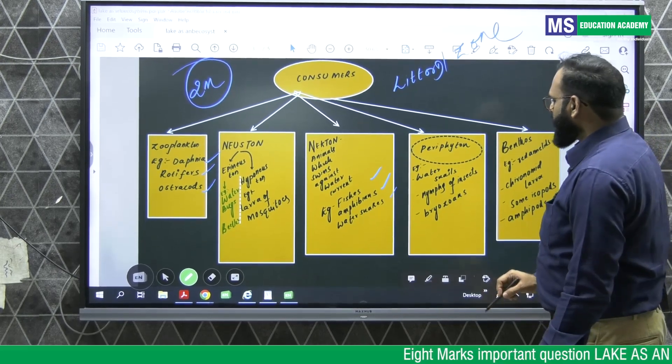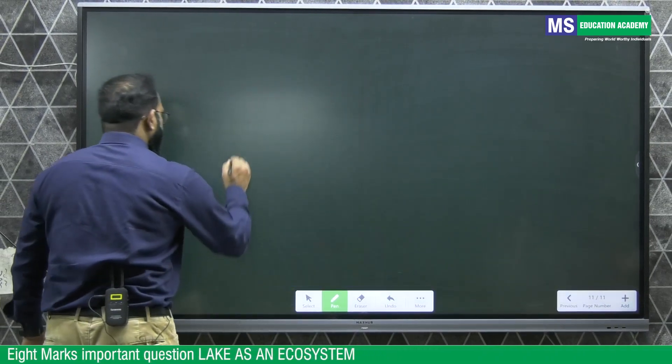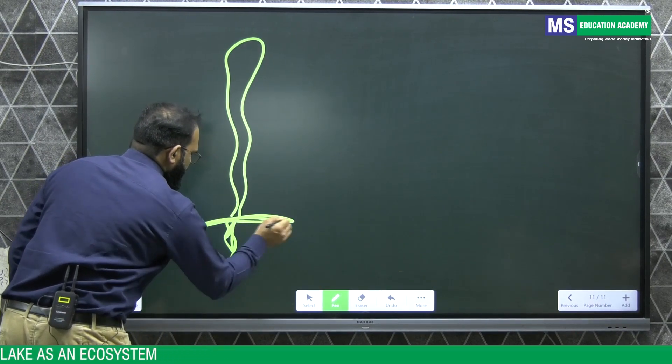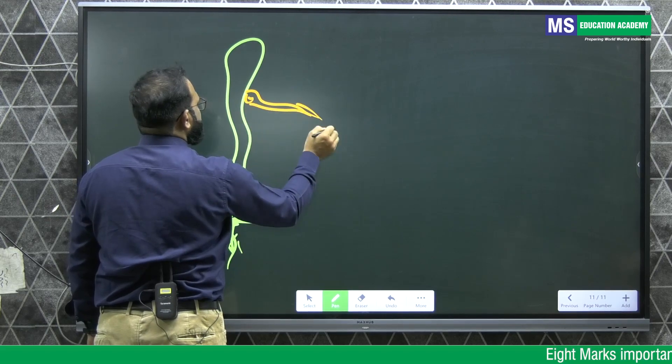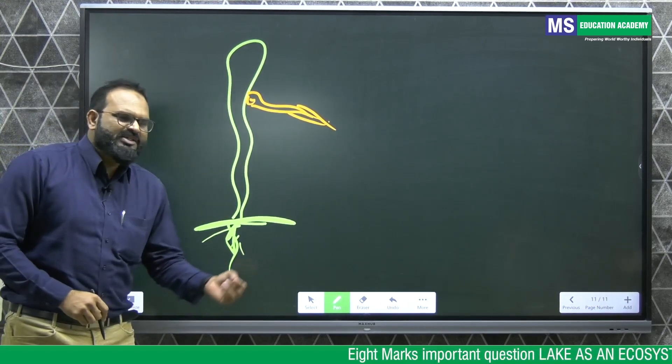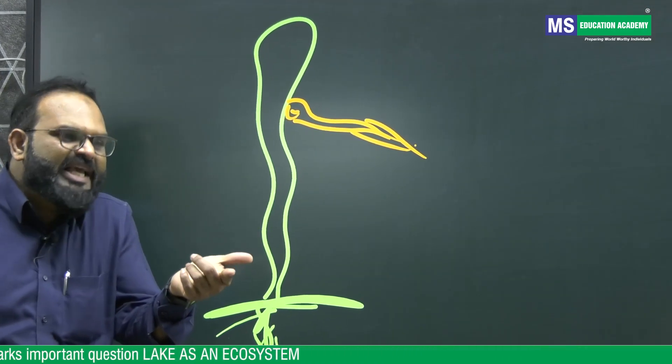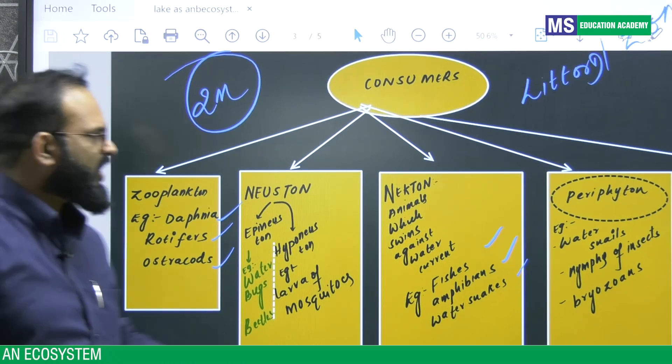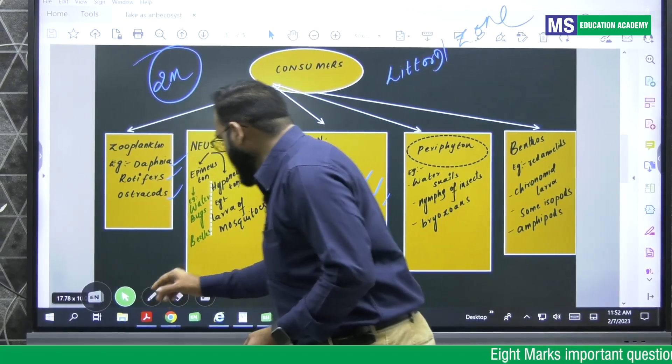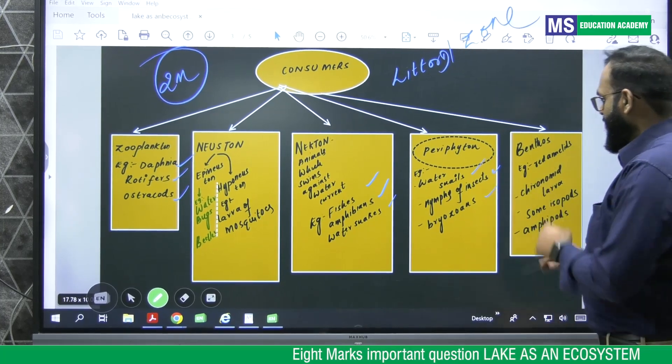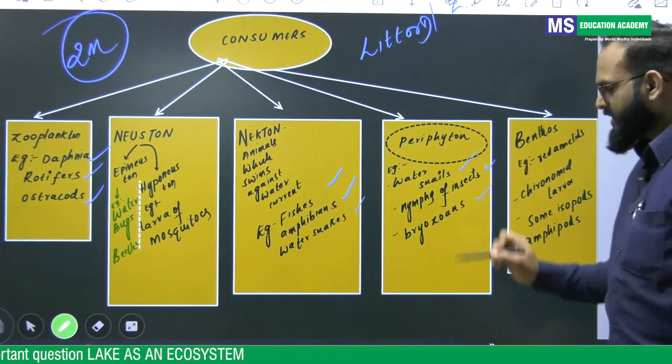And next category, what are Periphyton? Periphytons are the organisms which cling or attach to aquatic weeds. For example, like tadpole larva or small snails. So these stick to the aquatic plant's leaves. So these organisms are called Periphyton. Example, water snails, nymphs of insects, bryozoans.